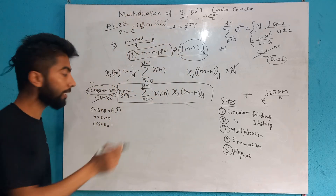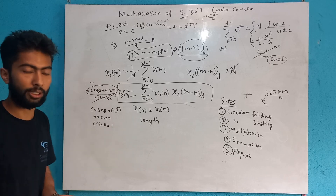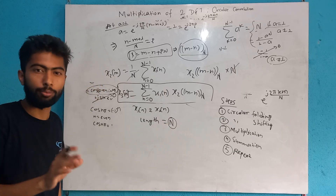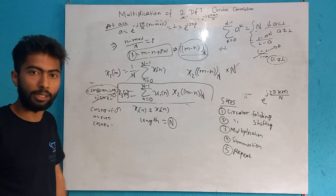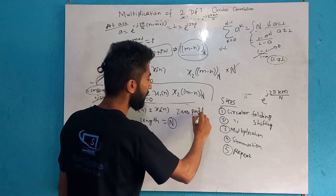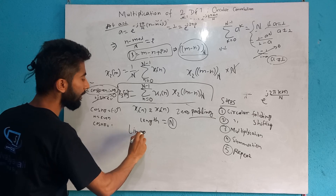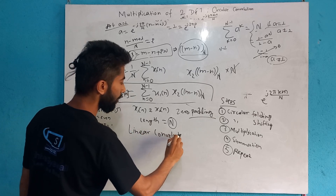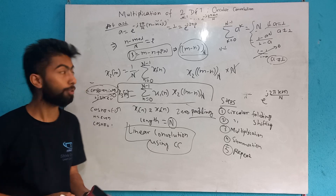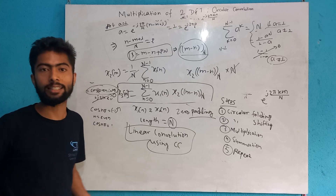Length must be equal. Length must be equal for circular convolution. For linear convolution the length is the same rule. Using circular convolution, we can compute linear convolution. Thank you so much for watching this video. This is all about multiplication of 2DFT and circular convolution. Please visit engineeringnotes like canelaabha.com and junior online canelaabha.com. Thank you.